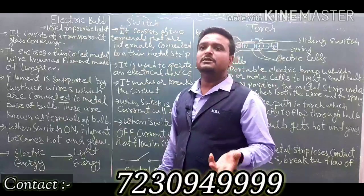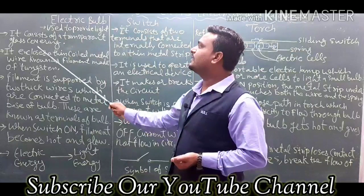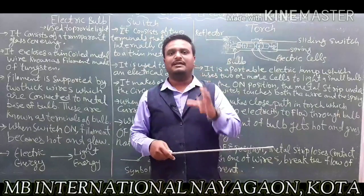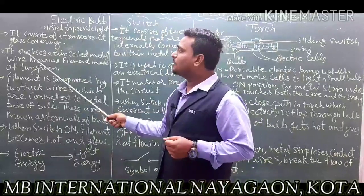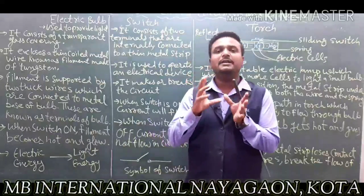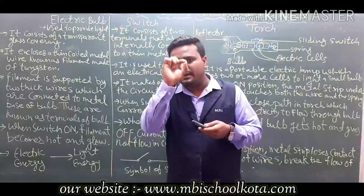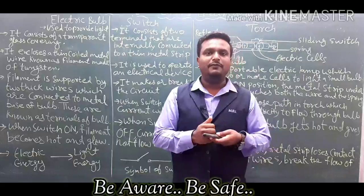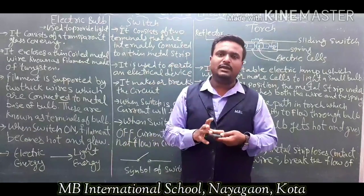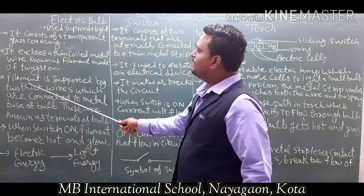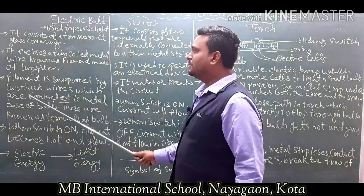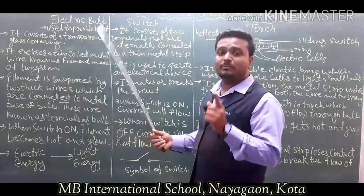Electric bulbs can be different — LED bulbs or normal bulbs. It consists of a transparent glass covering. It encloses a thin coiled metal wire known as a filament, made of tungsten. Tungsten is a high-resistance metal. The filament is supported by two thick wires which are connected to the metal base of the bulb.